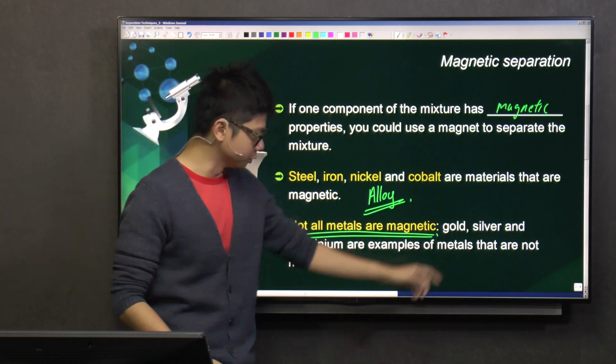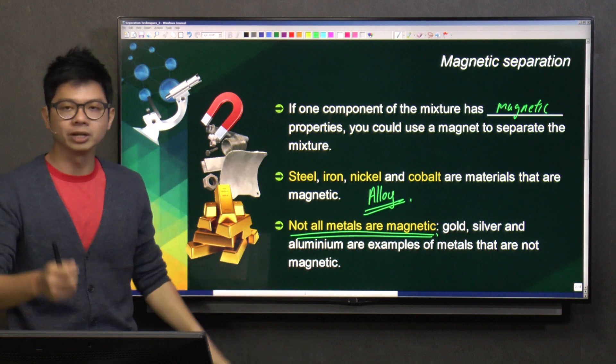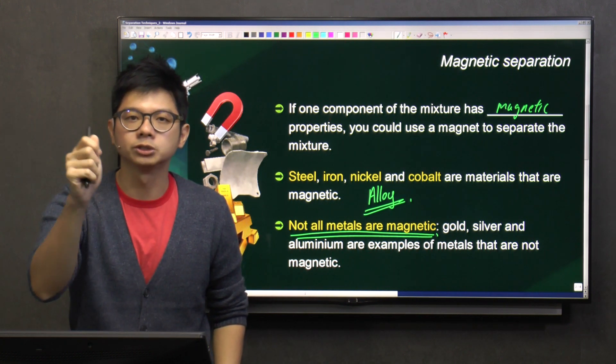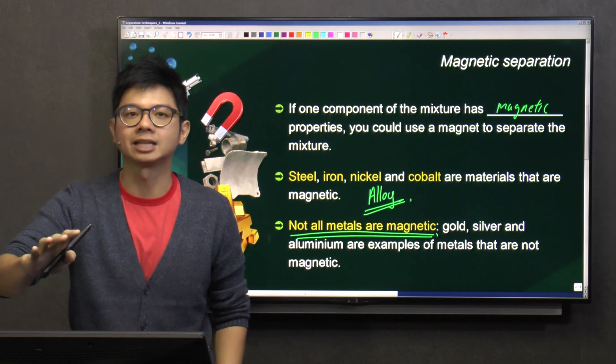So if you were to take, like, gold, silver, and aluminum, right, you put it near a magnet, does it attract? No, it will not attract because gold, silver, and aluminum, they are not magnetic materials.